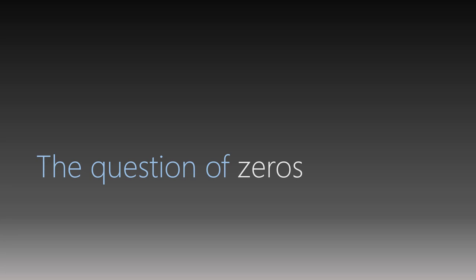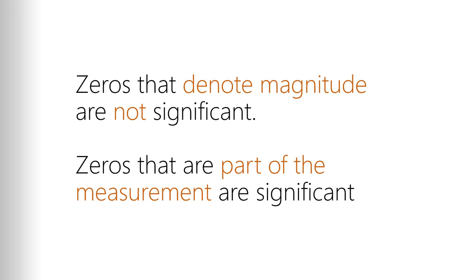So the first thing we've got to talk about is how do we denote how many significant figures a number has? And the biggest problem students have with this is what we call the question of zeros. What zeros in a number count and what zeros in a number don't count? Easy way to think about it is zeros that denote magnitude, solely there to place the decimal point somewhere, are not significant. However, zeros that are part of the actual measurement, if you cannot rewrite the number without those zeros, then they are significant.